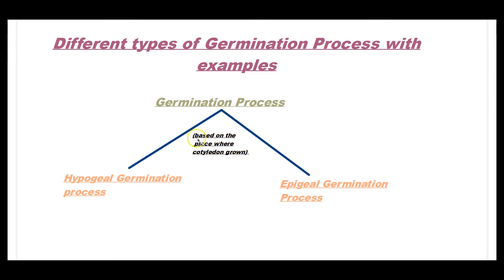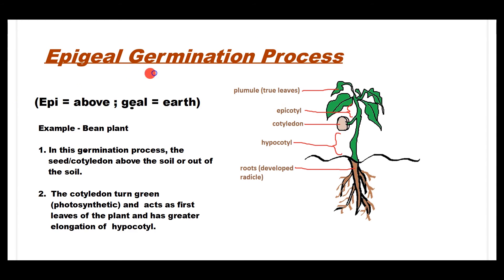The germination process is mainly divided into two types based on the place where the cotyledon grows. First category: hypogeal germination process. Second: epigeal germination process. Epigeal germination — 'epi' means above, 'geal' means earth. Example: bean plant. In this process, the cotyledon grows above the soil or out of the soil. The cotyledon turns green, becomes photosynthetic, and acts as the first leaves of the plant. It has greater elongation of the hypocotyl, which will be long and green as it is photosynthetic.